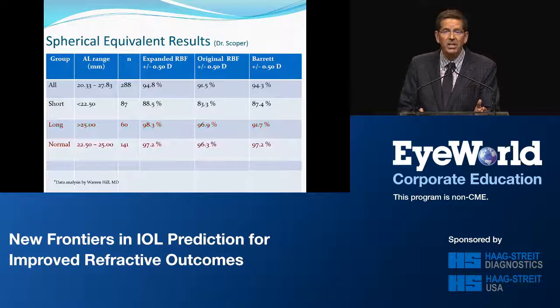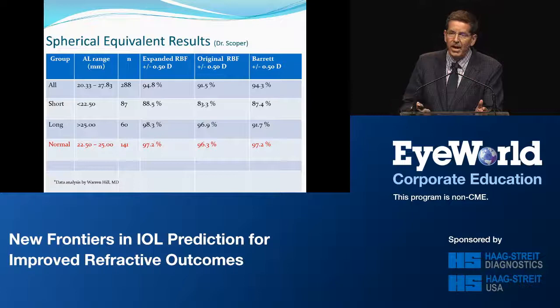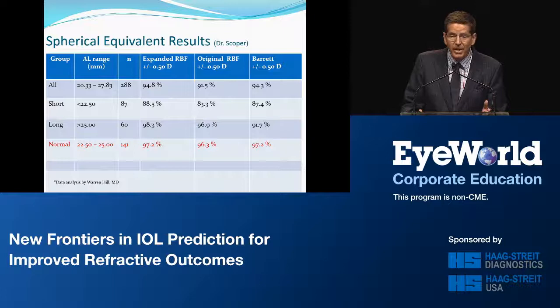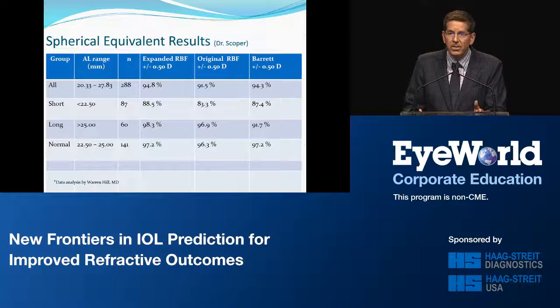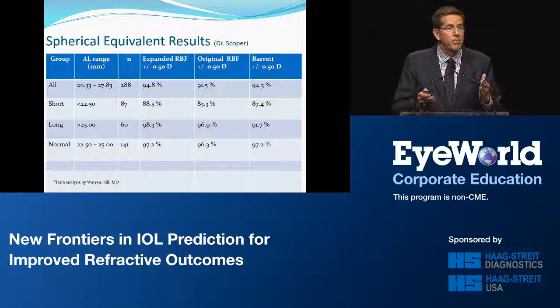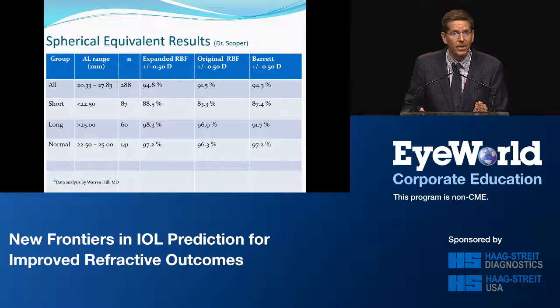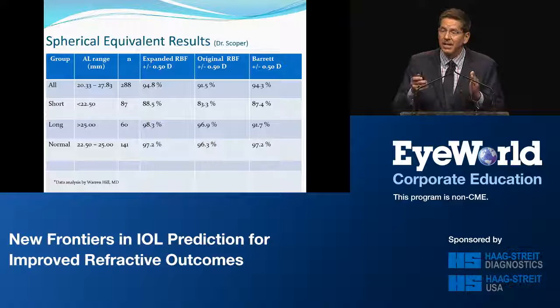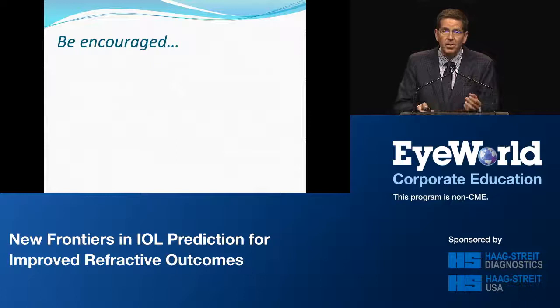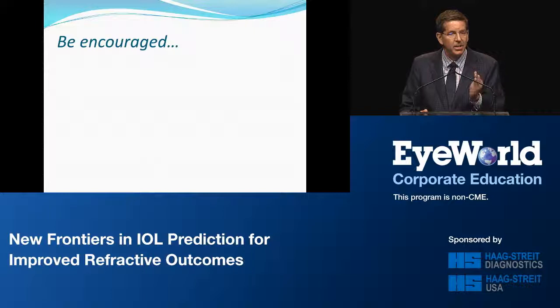When we look at these numbers at around 95% and above, you can understand why we all have an obligation to our patients to get the best possible spherical equivalent. You don't have to be Warren Hill to get these kinds of results — you need to learn from Warren Hill, which is what you're doing today. Everyone in this room can get these exact kinds of results. Go back to your practices, pay attention to these details, look at the new formulas, and get great results. You owe it to yourself and to your patients.